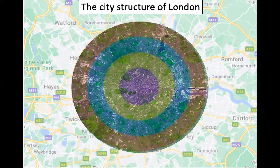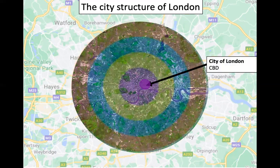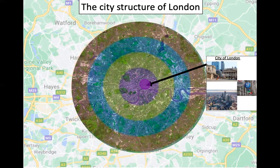Now we can add the Burgess model and look at how it fits into London. Starting in the middle with the CBD — London does have a CBD in the centre and this is the City of London. This was the original financial district of London, full of offices and business headquarters, and as we can see from these photos there's a mixture of older buildings and very new buildings built from the year 2000 onwards.